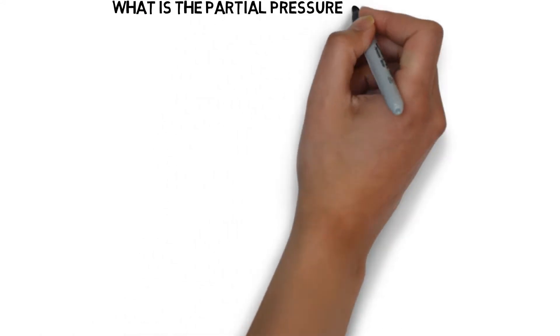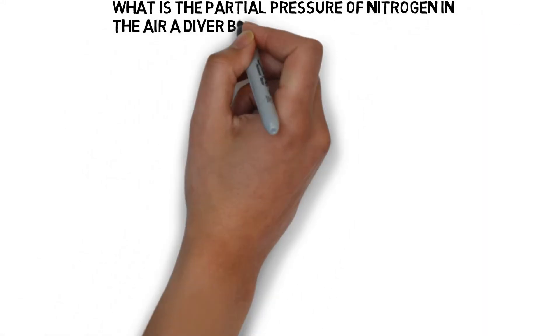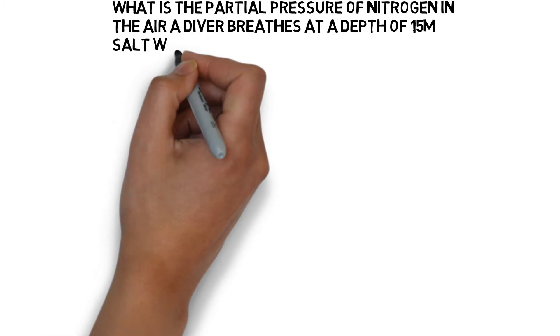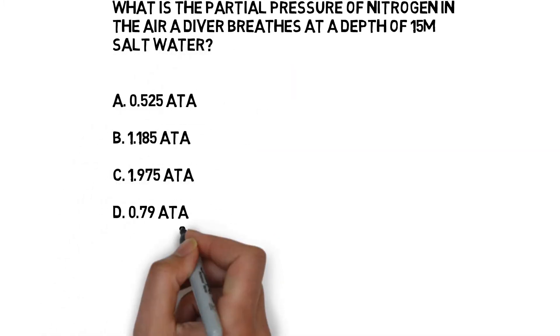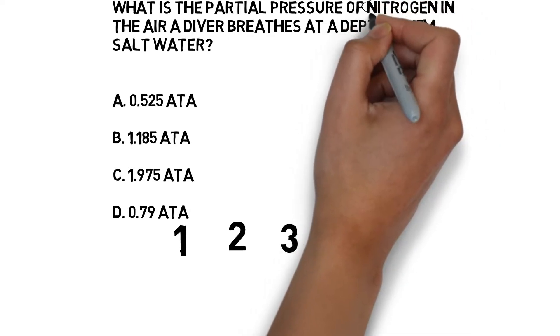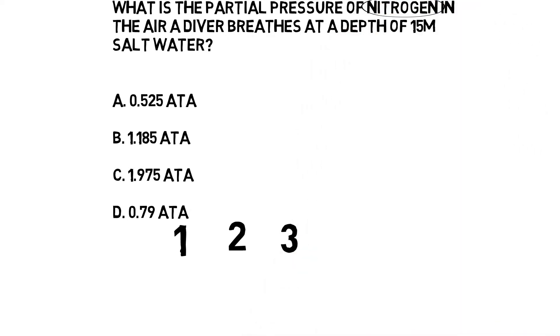It's surprising given that they're actually so simple. I think it's the simplicity of them that causes the difficulty. So here we have a question asking for the partial pressure of nitrogen in air at 15 meters, assuming you're in salt water.